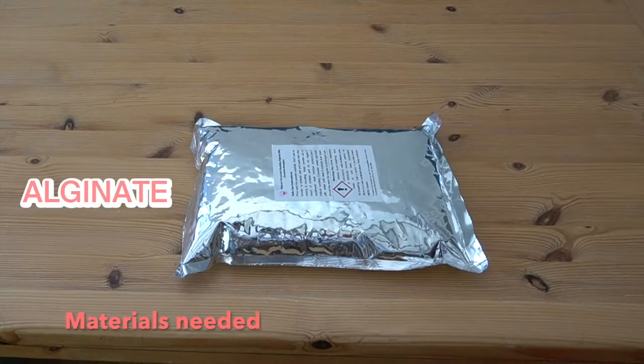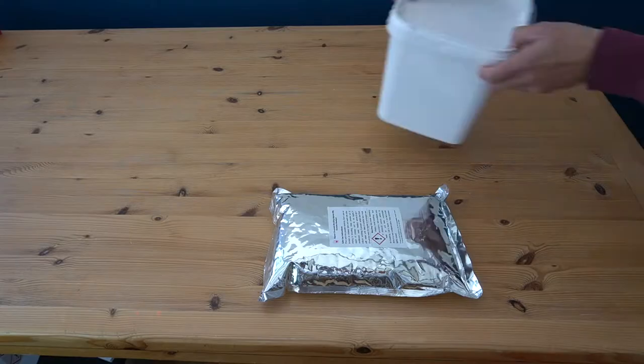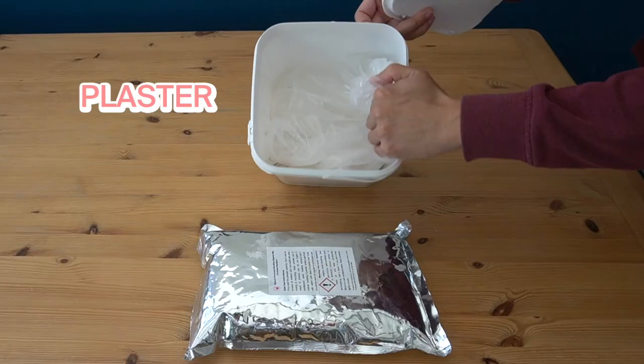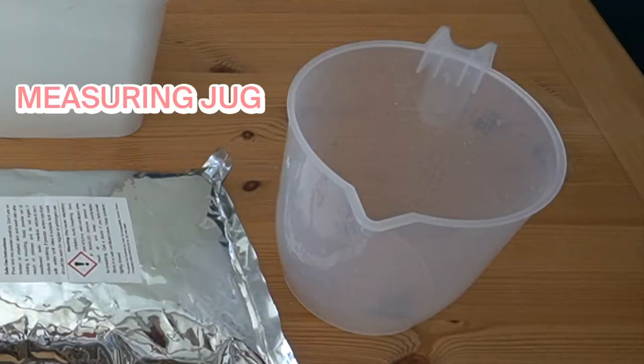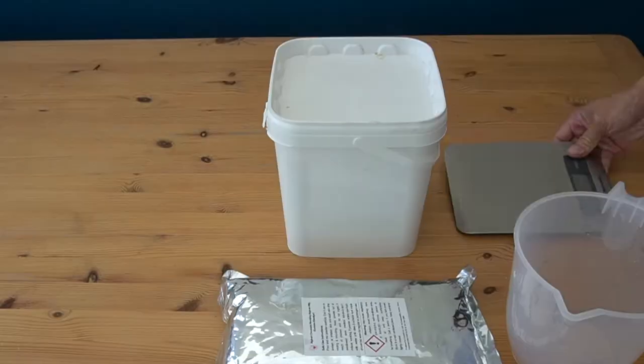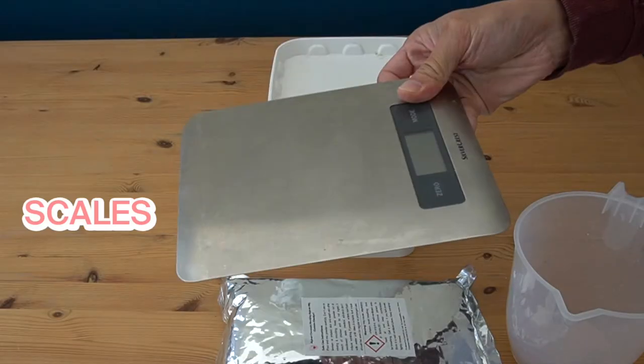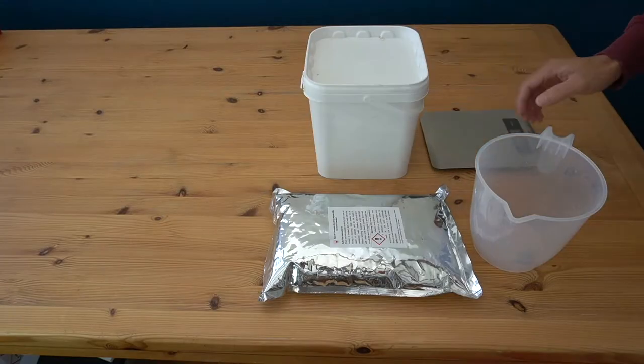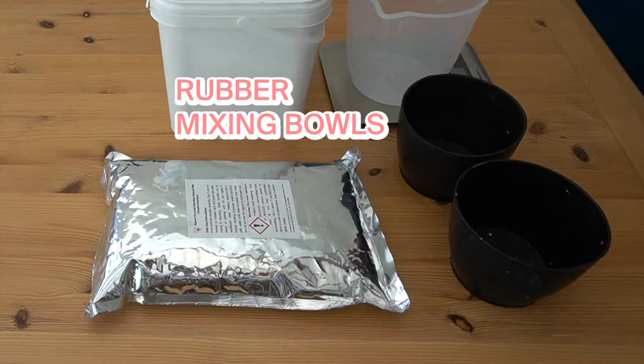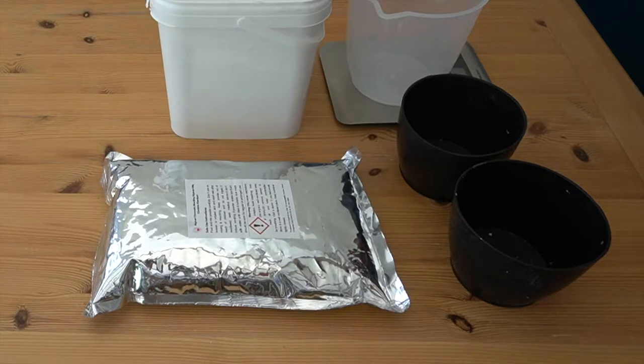We're going to use alginate, which is a seaweed-based material. For the casting, we're going to use plaster of Paris, a large measuring jug for calculating the right amount of water for the mixes, some scales to measure the right amount of quantities needed, and a couple of mixing bowls for the plaster as this makes it so much easier to clean after.